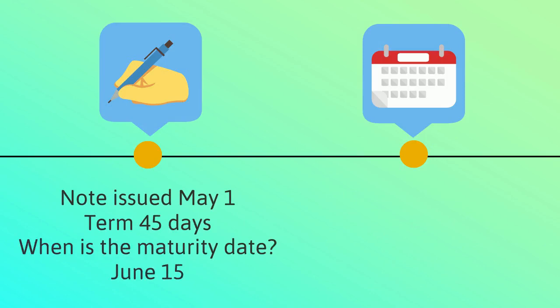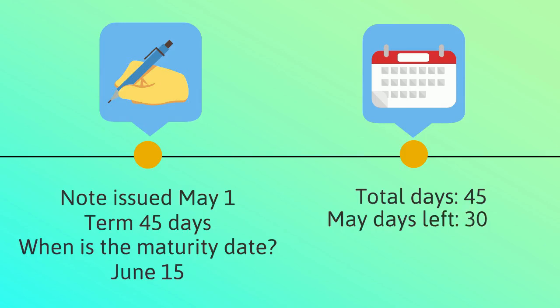Let's walk through how we got June 15th. The note term is 45 days and was issued on May 1st. May has 31 days, so with the note issued on May 1st there are 30 days left in May. Subtracting those 30 days, we have 15 days remaining. The following month is June and it has more than 15 days, so the note is due on June 15th.